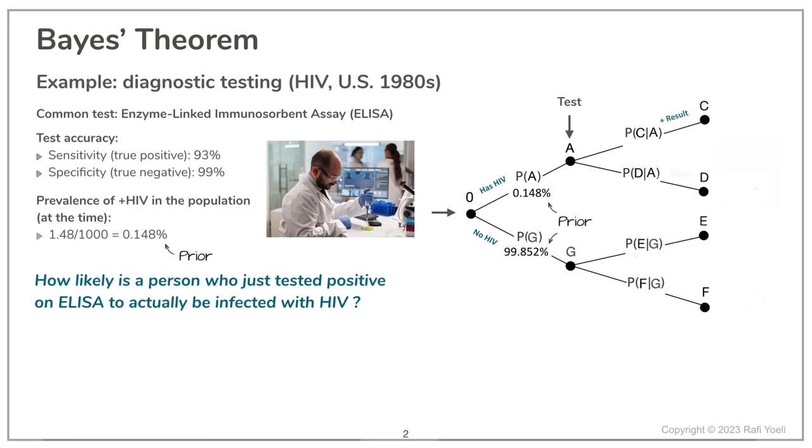From here onwards there are again two options, because the answer comes back either positive or negative. Since the top branch of the tree is for people we know to be sick, the probability of the ELISA test producing a positive result is the true positive of 93%. So the second top branch must be 7%, which is the complement of 93% to 100%.